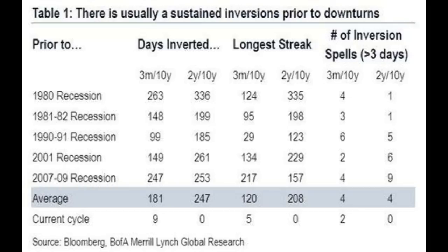For the two-year and the 10-year curve, that was inverted for 208 days on the longest streak. On average there's about four inversions of each curve measure prior to a recession. On average the three-month and the 10-year yield curve is inverted 180 days prior to a recession, and the two-year and the 10-year curve is typically inverted 247 days prior to a recession.